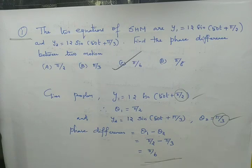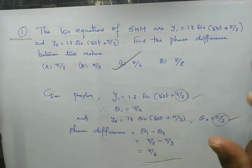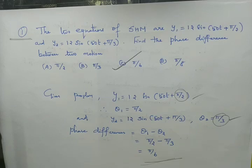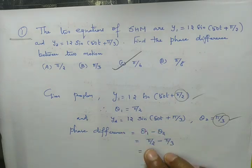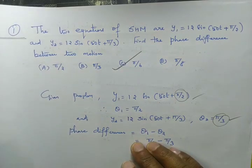This is the formula to use. Be very careful — both equations should be in the same form: 50t plus phase angle. The phase difference is theta 1 minus theta 2, which is pi by 2 minus pi by 3, equal to pi by 6.